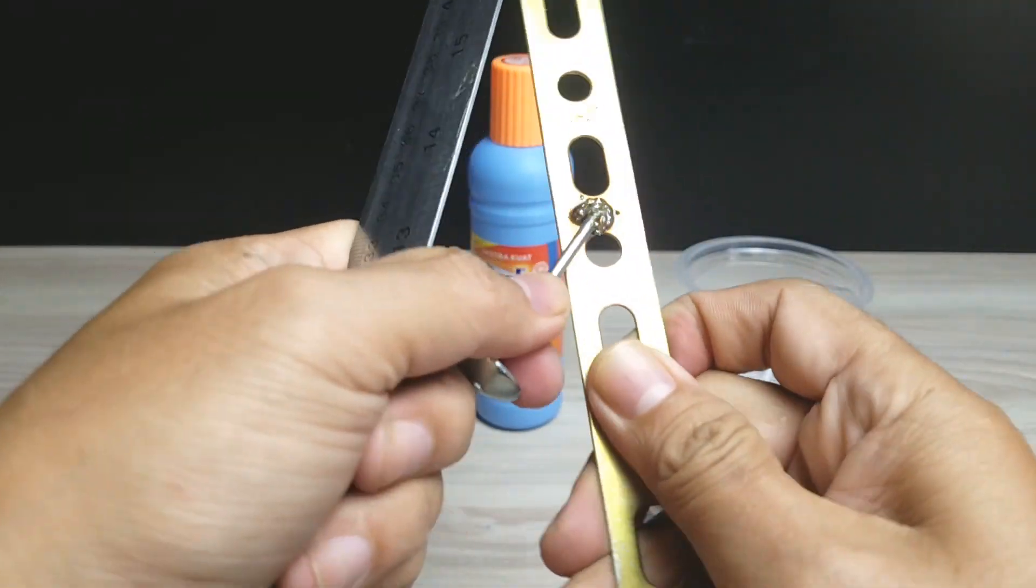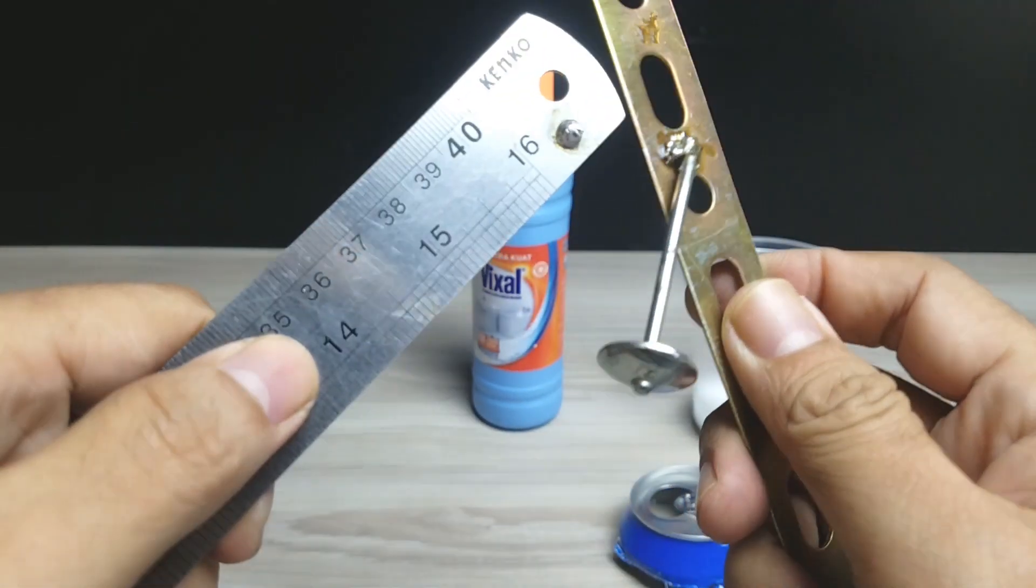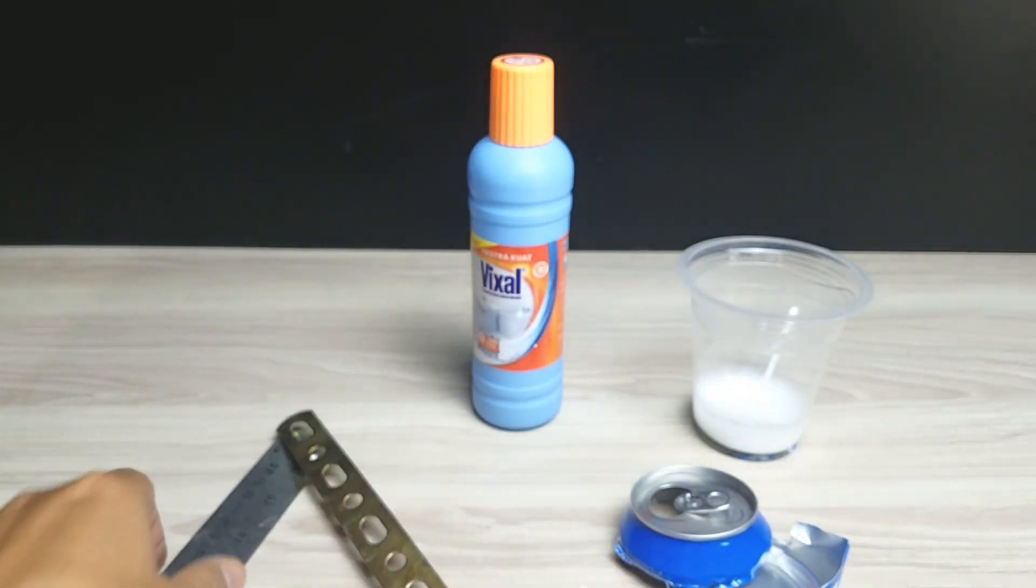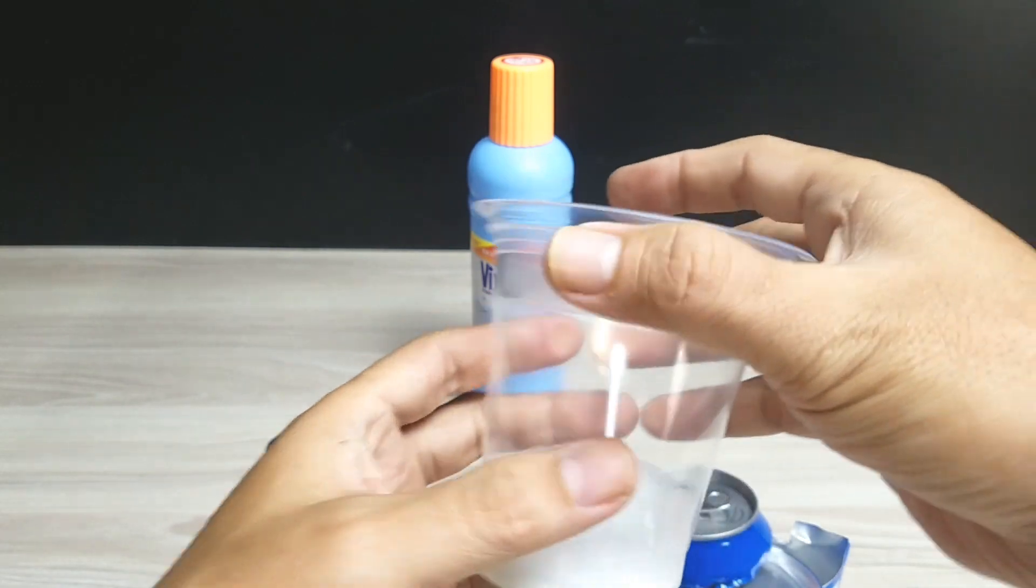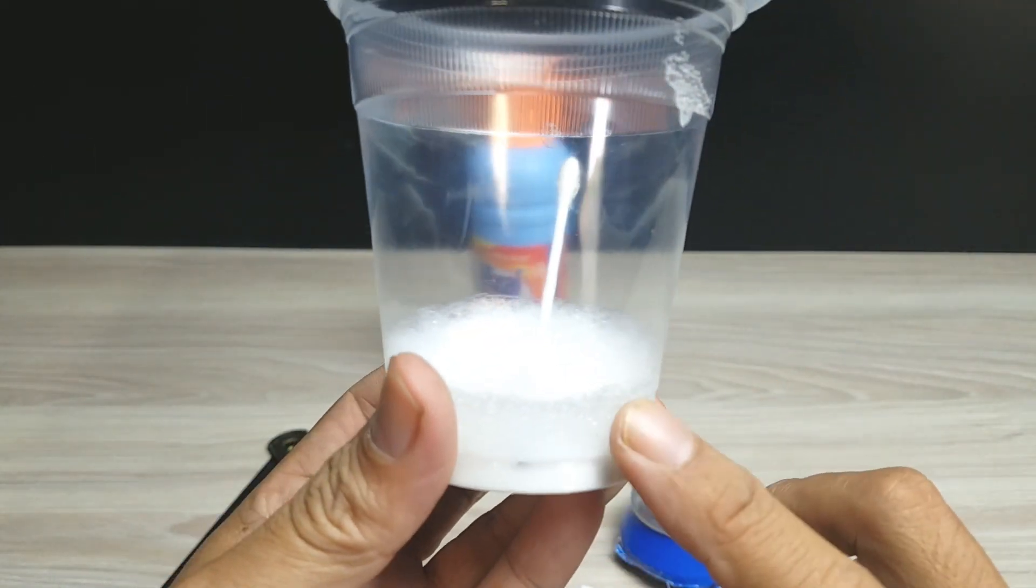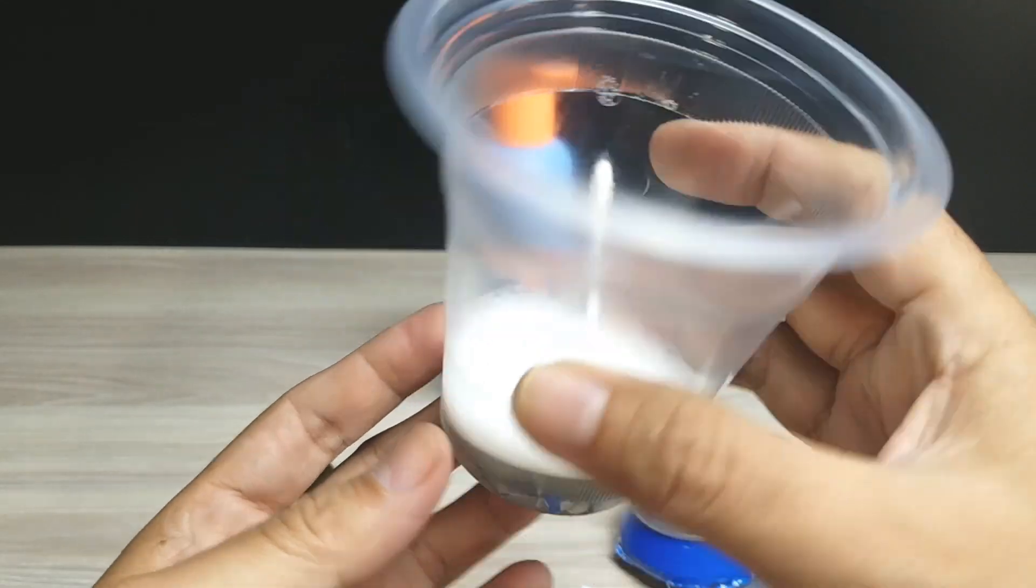Kuat sekali teman-teman ya, jadi tidak perlu beli flux mahal-mahal. Ini bisa untuk kondisi darurat, bikin sendiri dari barang-barang yang ada di sekitar kita. Ini bisa disimpan teman-teman, jadi lama-lama busanya akan hilang dan akan menjadi bening.